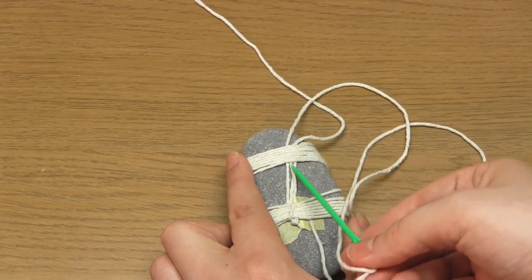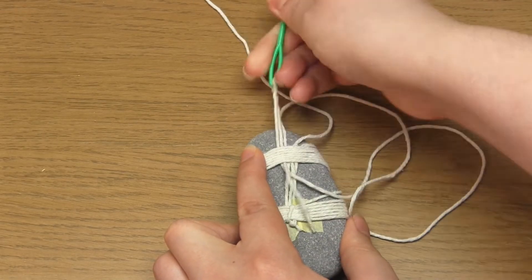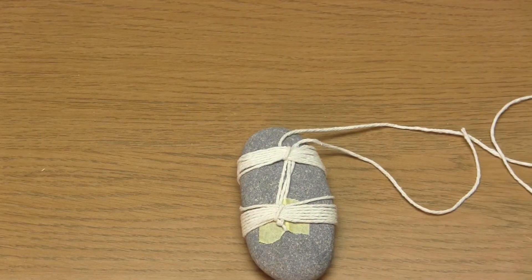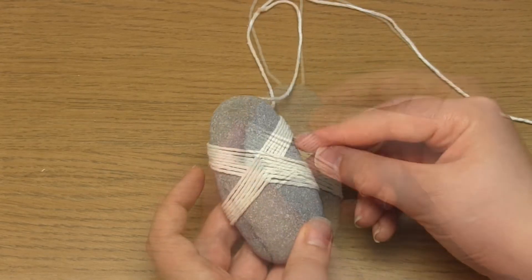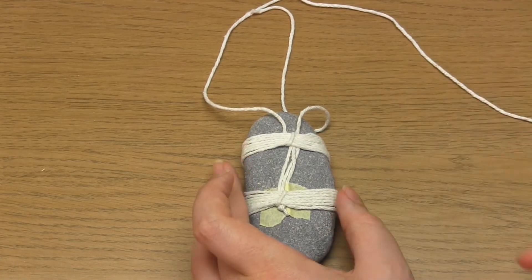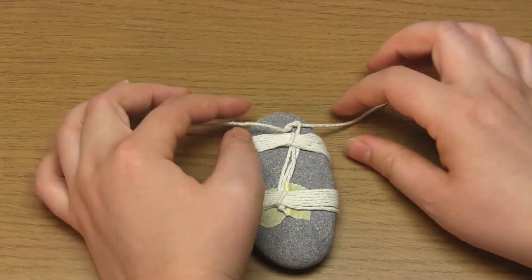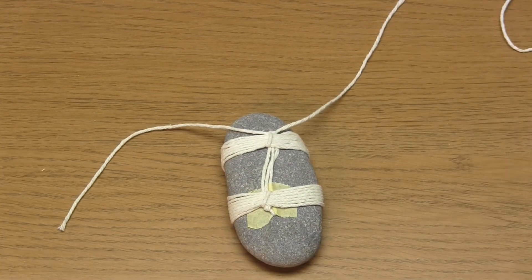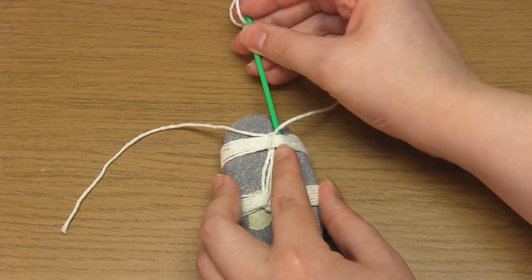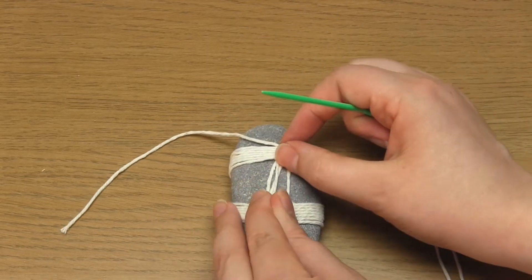Then go up and under the upper band again. And finally tie the two yarn tails together in a double knot. Use your yarn needle to feed both yarn tails behind the upper band to hide them. Then cut off the excess yarn.